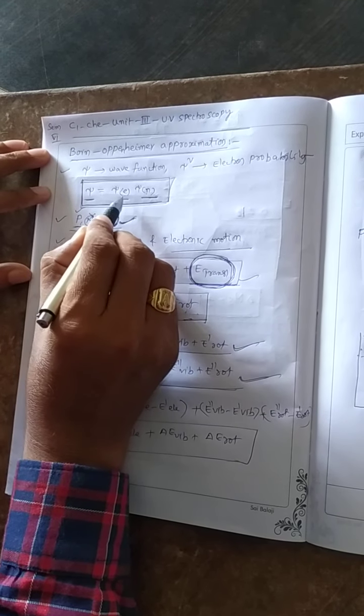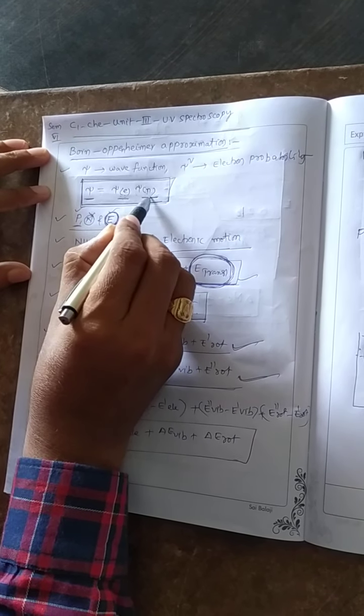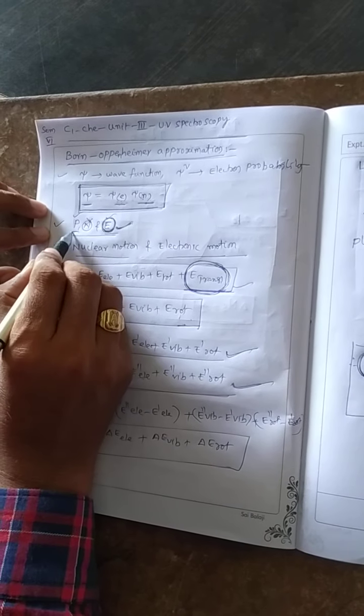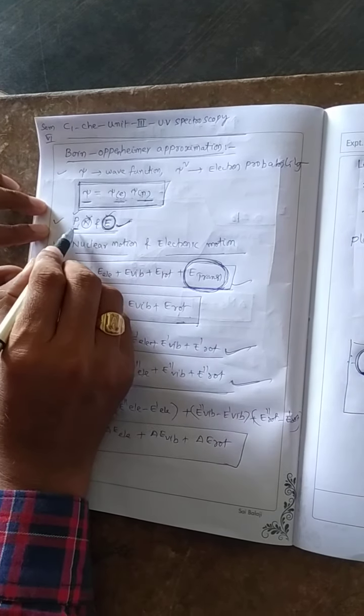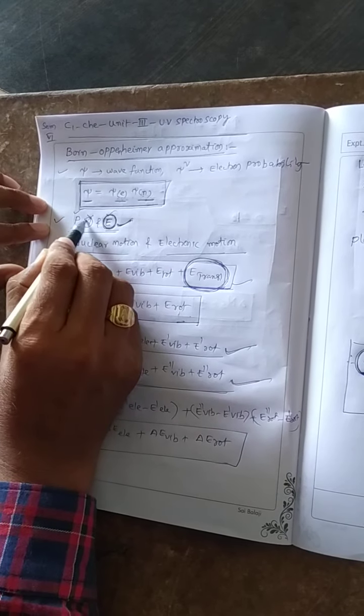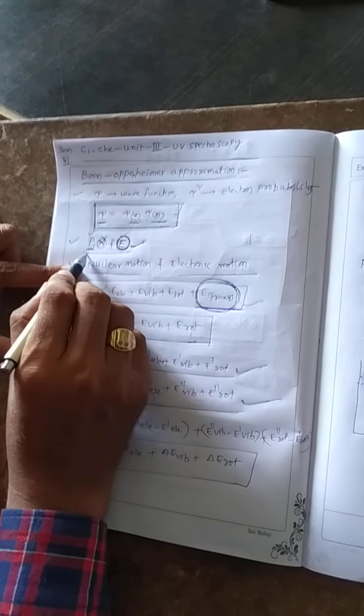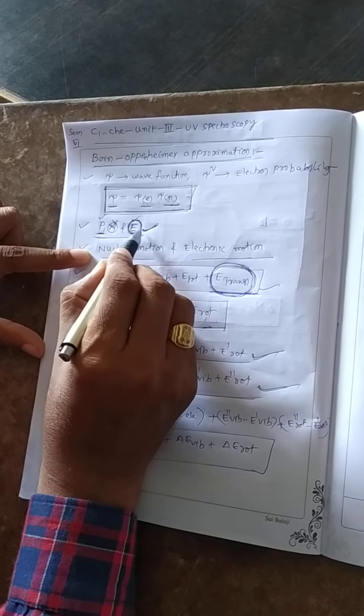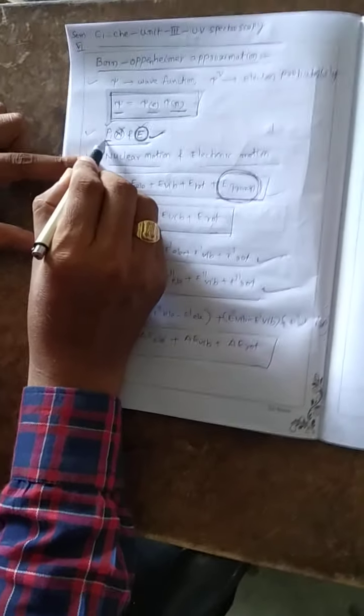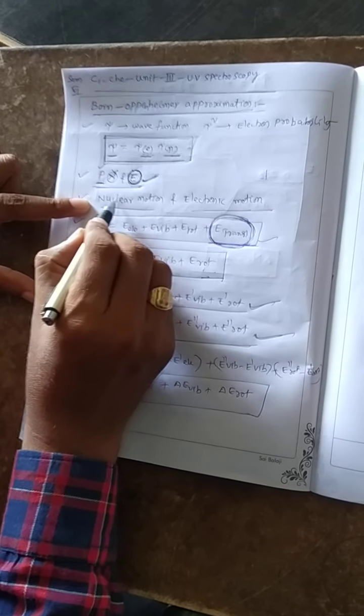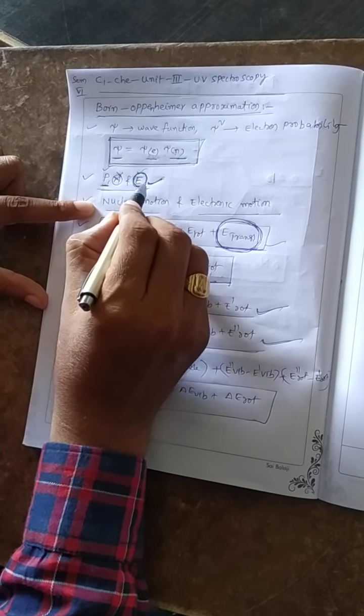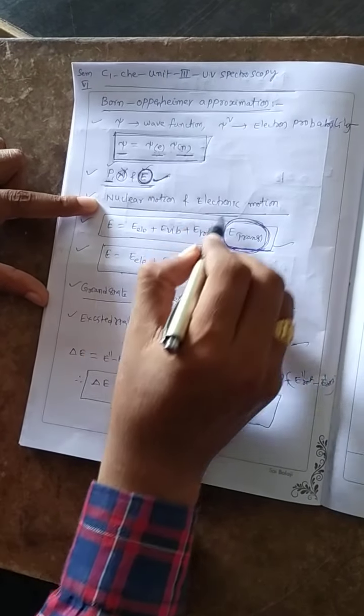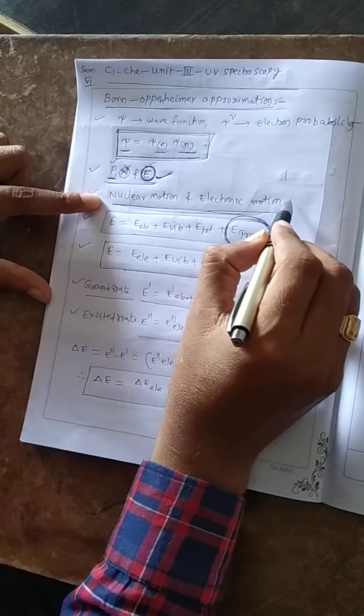Fundamental particles of an atom are protons, neutrons, and electrons. Neutrons have no charge. However, electrons are much lighter particles than protons, so electrons move faster than protons.